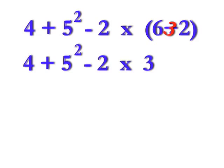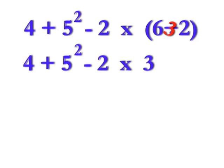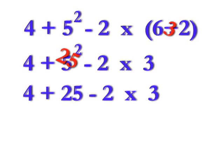So, what do you do next? Think of PEMDAS again. After P for parentheses, you have an E for exponents. Are there any exponents? Yes. There's 5 squared, which is 5 times 5, or 25. Rewrite the sentence again. This time is 4 plus 25 minus 2 times 3.